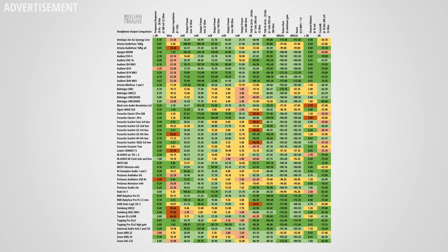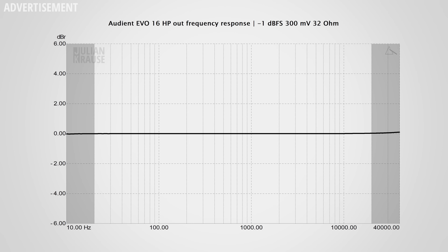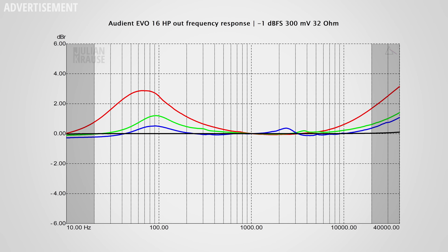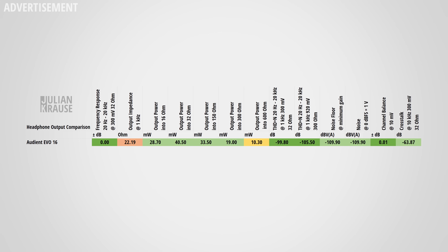Headphone output time — this is only relevant for the Evo 16, as the SP8 doesn't have headphone outputs. Comparing the Evo 16 to other interfaces: the frequency response is ruler-flat with a dummy load, but connecting real headphones tells a different story. With three different 32-ohm headphones connected, their performance is impacted differently by the Evo 16. With the worst contender, there's a deviation of up to 3 dB — which is plainly audible. This is the result of the relatively high output impedance of 22 ohms.